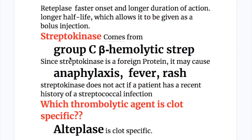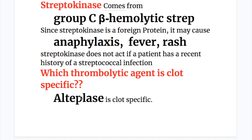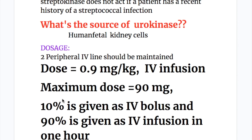Streptokinase comes from group C beta-hemolytic streptococci. Since streptokinase is a foreign protein, it may cause anaphylaxis, fever, and rash. Streptokinase does not act if a patient has a recent history of streptococcal infection. The source of urokinase is human fetal kidney cells.